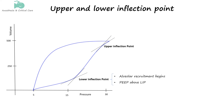The upper inflection point occurs at the pressure where the lungs begin to over-distend, indicating that alveoli are being stretched too much. Beyond this point, the risk of lung injury from over-inflation or volotrauma increases. Ventilatory settings should keep pressure below this point to avoid causing damage to the lung tissue.